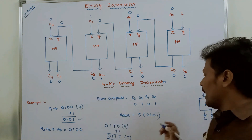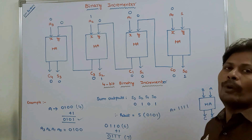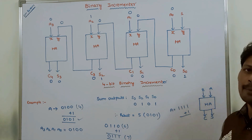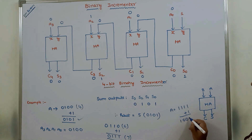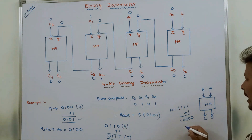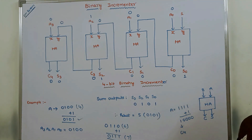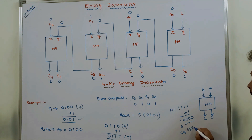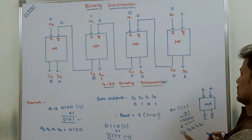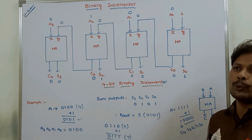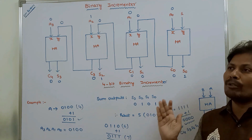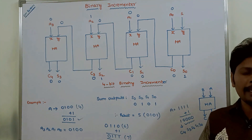Suppose register A stores the binary value 1111. The binary incrementer adds 1, and the result is 1 followed by four 0s — that is 10000. The 1 is stored in the carry output C4, and S3, S2, S1, S0 all become 0. So the carry output C4 equals 1 only when the binary value stored in the register is 1111. Otherwise, C4 is 0.